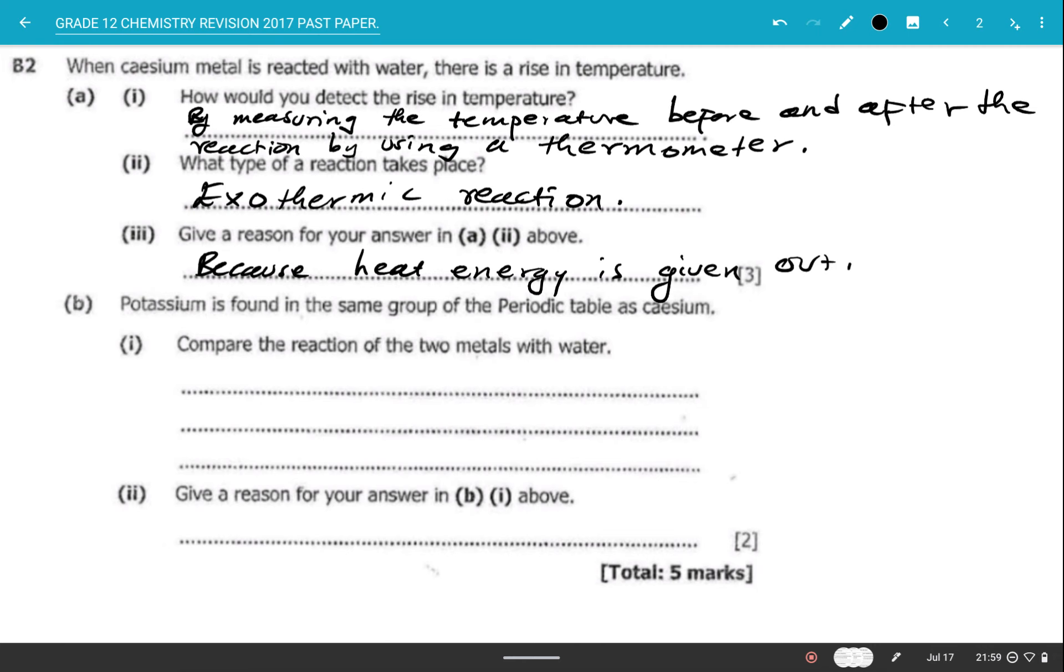B says potassium is found in the same group of the periodic table as calcium. Compare the reaction of the two metals with water. So since they're found in the same group with potassium, according to the reactivity of these same elements, you'd find that calcium will react more vigorously as compared to potassium.